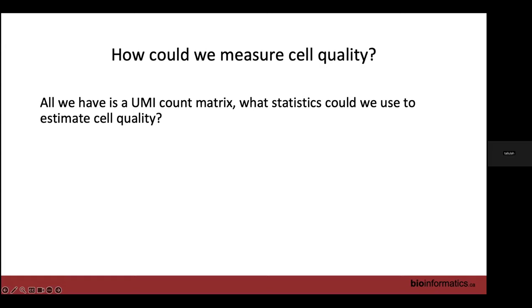How can we measure cell quality once we get our sequencing data? That's all we have anymore — we can't look at our cells or do any assays. All we have is our UMI count matrix and our mapping statistics, essentially, and that's all we have to go on to estimate cell quality.